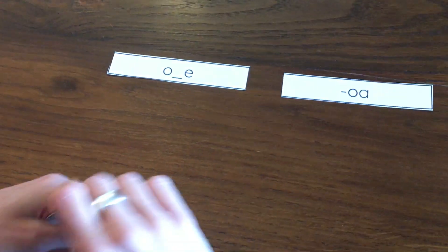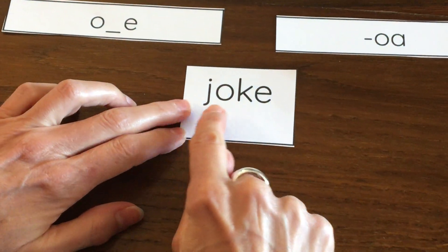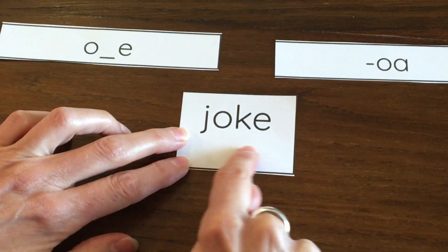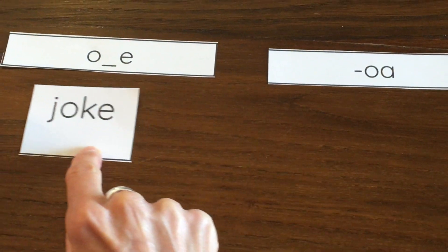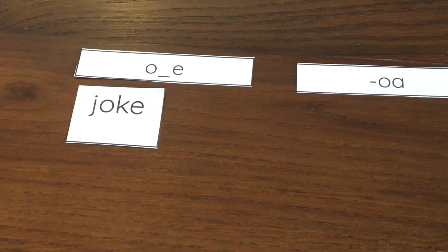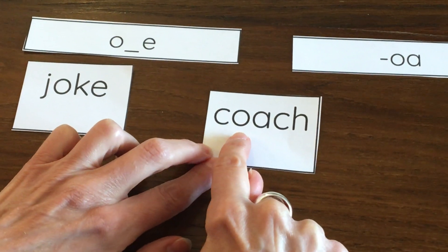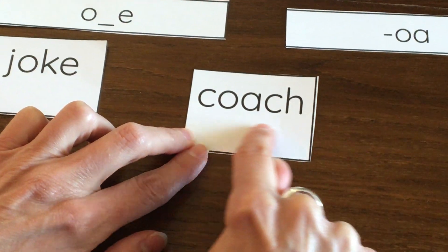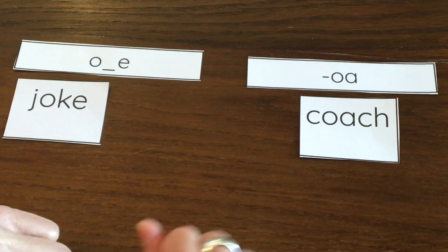Let's take a look at these words I have. Help me read these. Joke. Like my friend Tancredi loves to tell me jokes. There's that O and that silent E. Help me read, coach. A coach is someone who teaches you a sport.